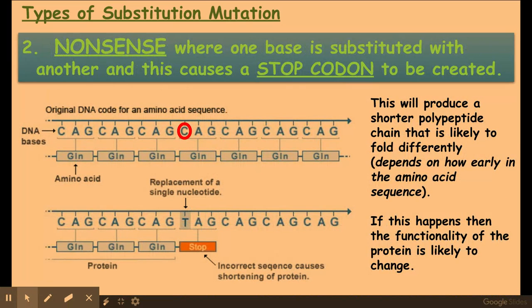A nonsense mutation is where a substitution has occurred — here, C has changed into T — but what's happened is it no longer codes for an amino acid; it codes for a stop codon. This stops translation early, producing a much shorter polypeptide chain, which will impact upon the functionality of the protein because it's not going to be as long.